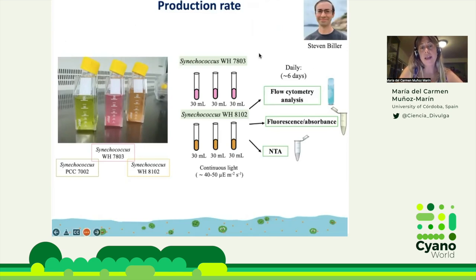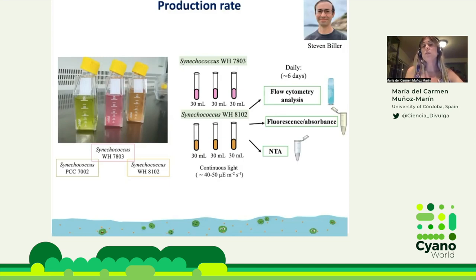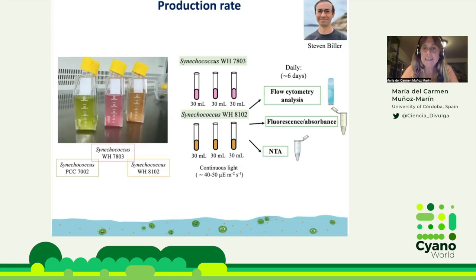We used axenic Synechococcus WH7823 and 8102. We did replicates under continuous light and measured every day for six days: flow cytometry analysis for cell abundance, fluorescence, and absorbance, and also nanotracking analysis to measure the concentration and size of vesicles. The nanotracking analysis system — also called Nanosight — uses both light scattering and Brownian motion to determine the concentration and size of vesicles.